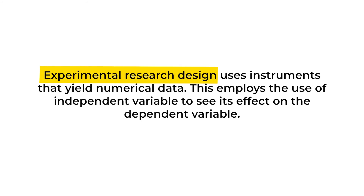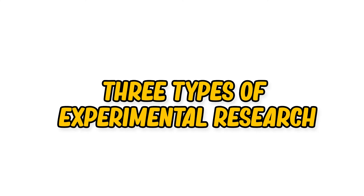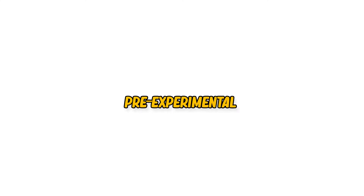Among quantitative research designs, experimental research is the most applicable in action research, where an intervention or action is implemented to address a specific classroom issue or problem. Experimental research design uses instruments that yield numerical data and employs the use of an independent variable to see its effect on the dependent variable. Depending on the research question and target respondents, the researcher may choose from among three types: pre-experimental, quasi-experimental, and true experimental.